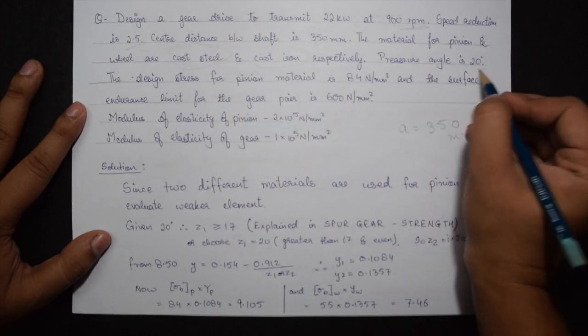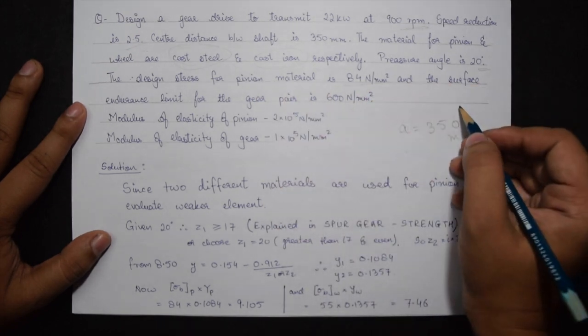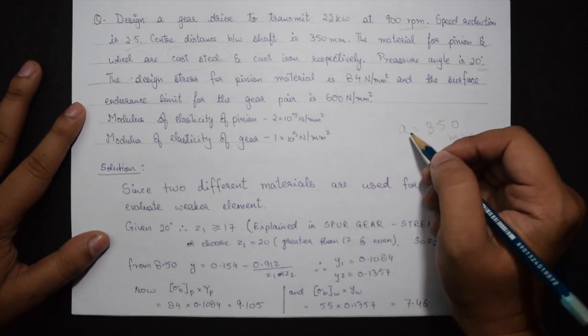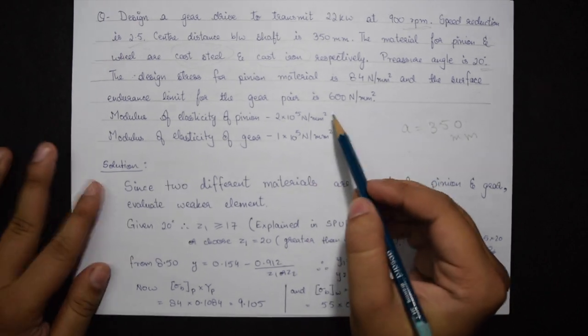The material for pinion and wheel are cast steel and cast iron respectively. Pressure angle is 20 degrees. The design stress for pinion material is 84 N per mm square and the surface endurance limit for the gear pair is 600 N per mm square. Both the modulus of elasticities are also given for pinion and gear.